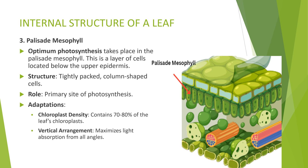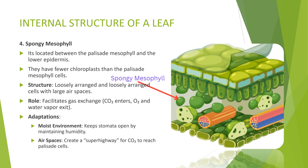4. Spongy mesophyll: the spongy mesophyll has loosely arranged cells with large air spaces, facilitating gas exchange — that is, carbon dioxide enters while oxygen and water vapor exit. It keeps the leaf's internal environment moist, aiding in the opening of stomata by maintaining humidity. Spongy mesophyll cells also have fewer chloroplasts than the palisade mesophyll cells.